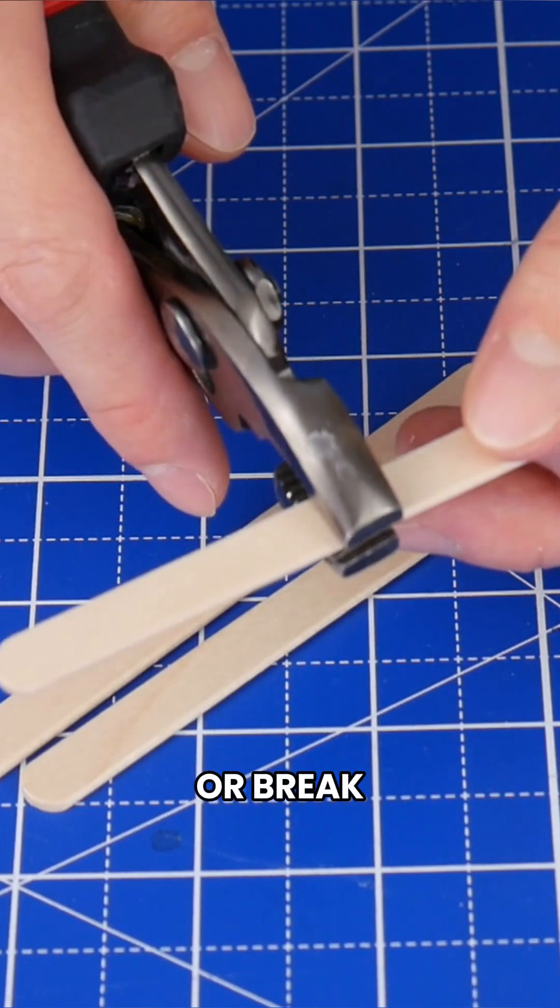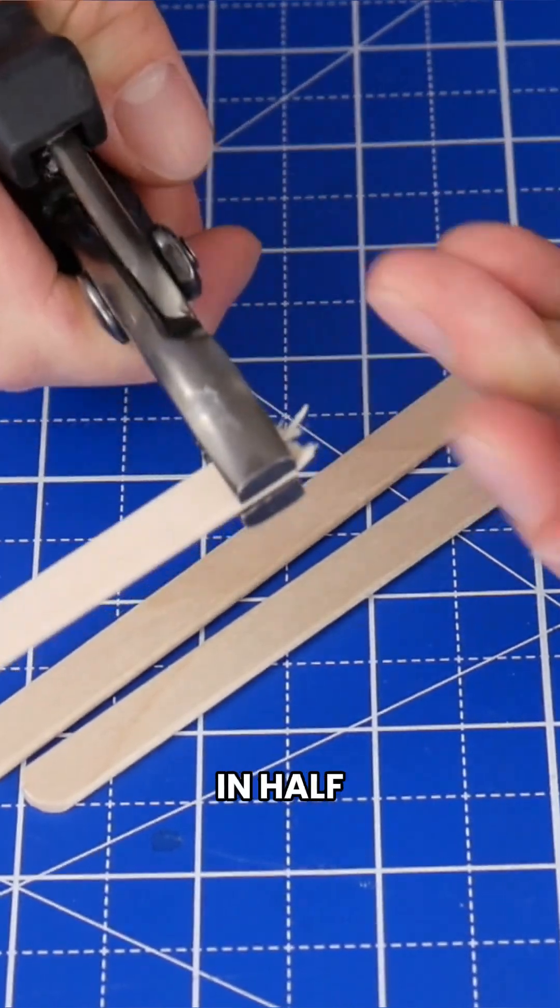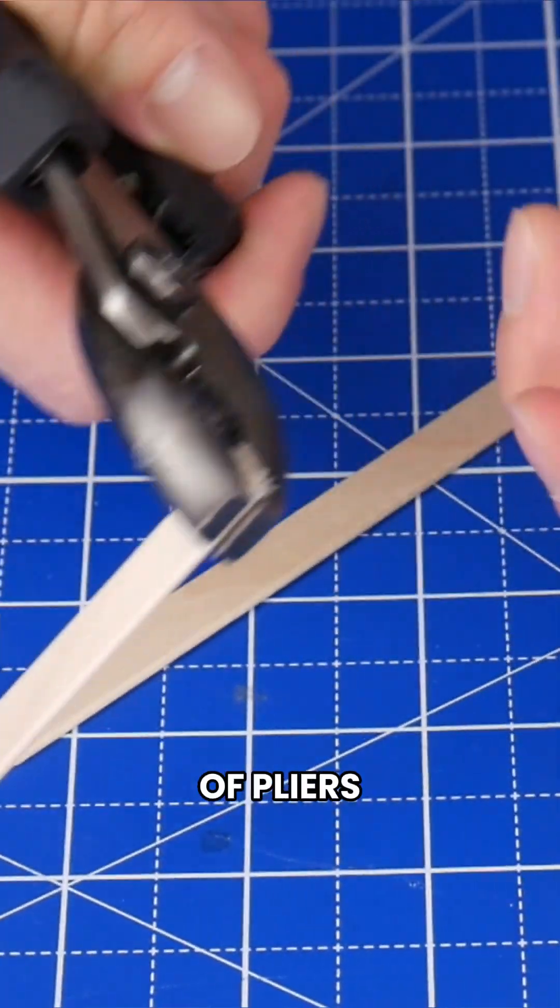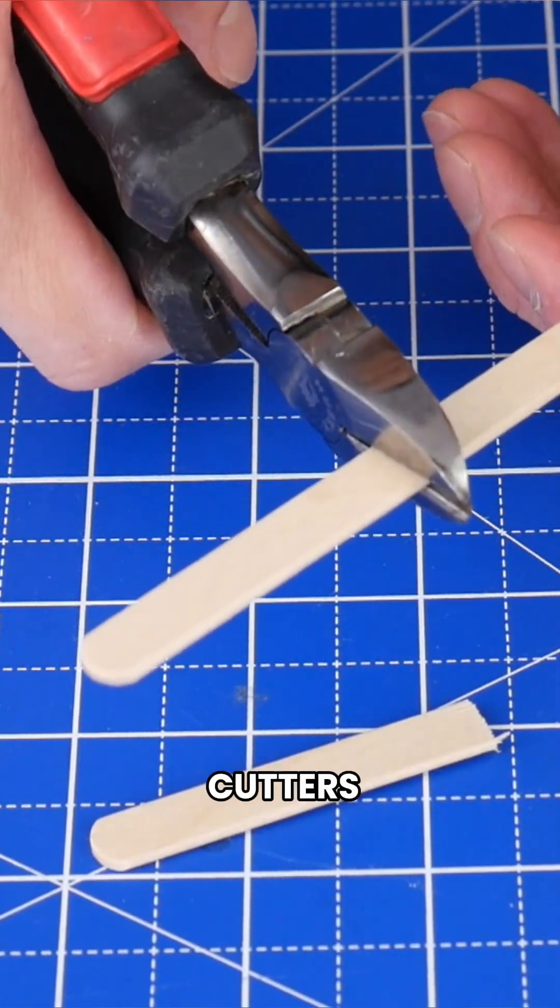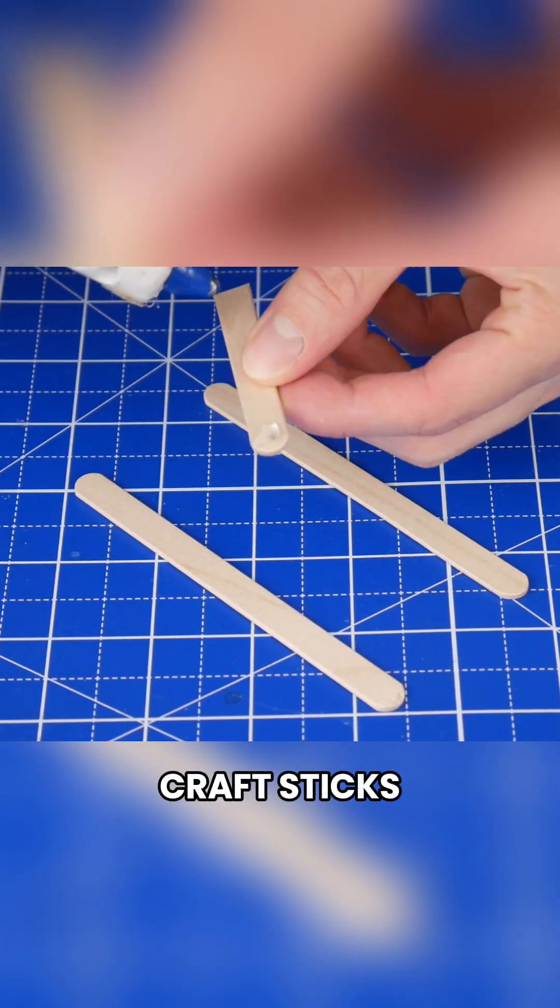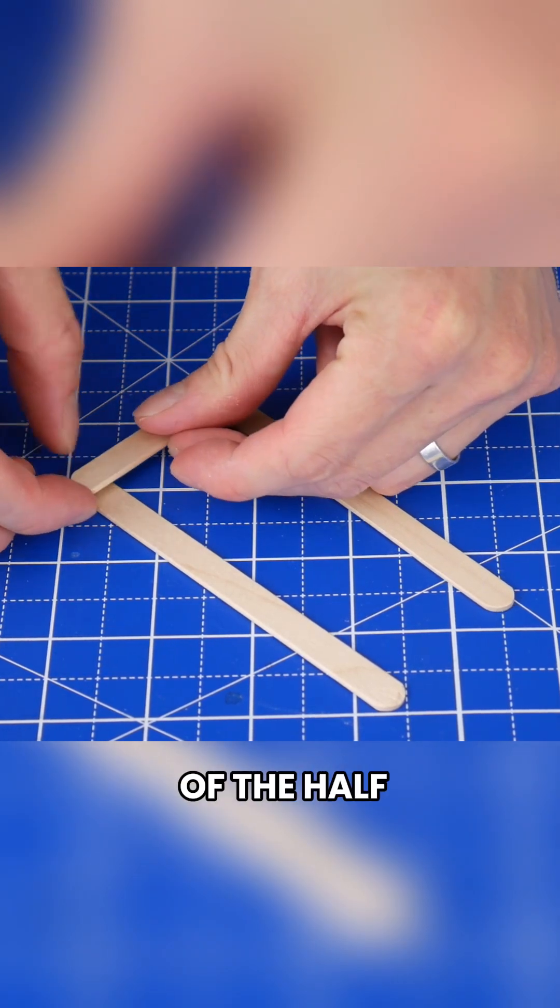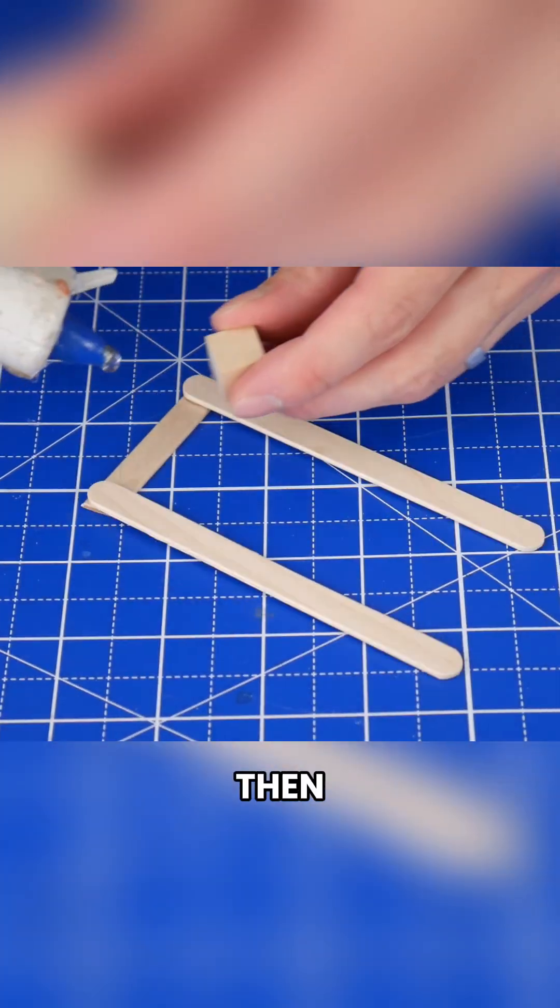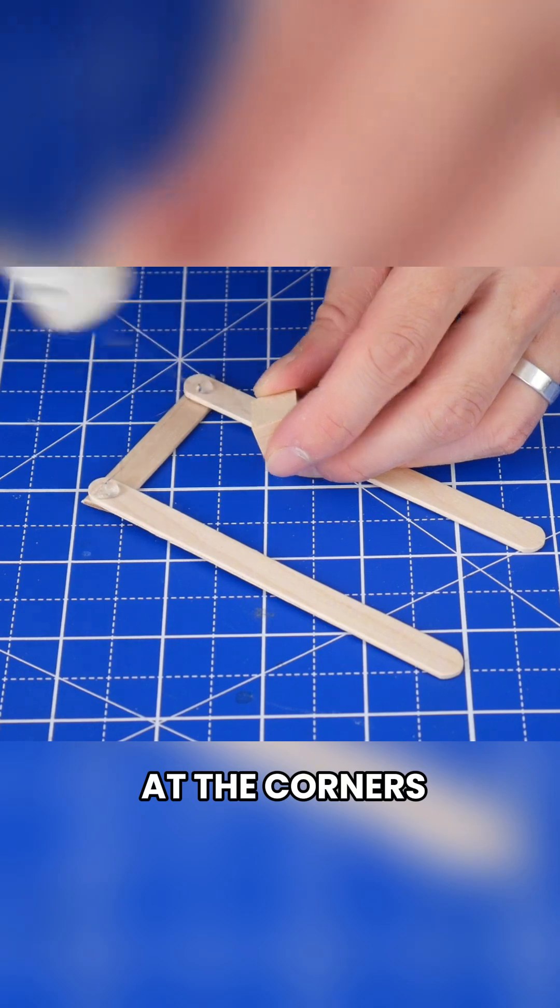Let's get started. First, cut or break three craft sticks in half using pliers or wire cutters. Connect two regular craft sticks together using hot glue and one of the half stick pieces, then flip it over.